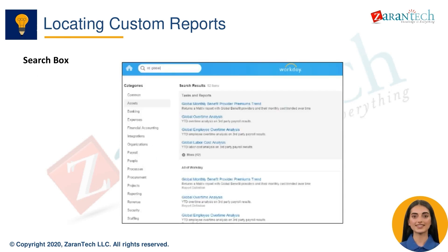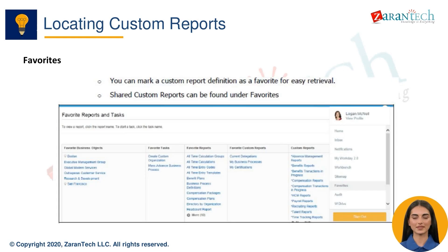Here is an example of searching for a report from the search box. I have entered 'RD My Report' and it brings up the report definition in results. The brief description is also visible, making it easy to identify the correct report.